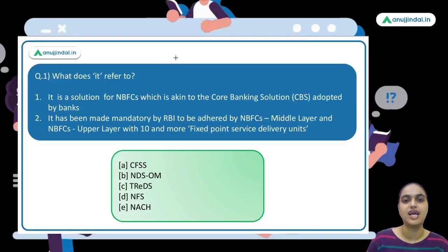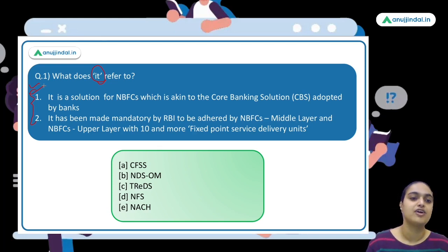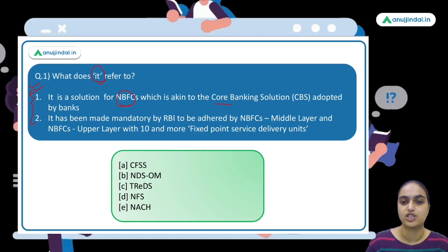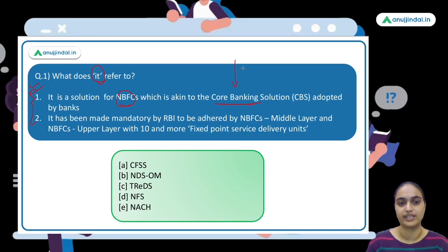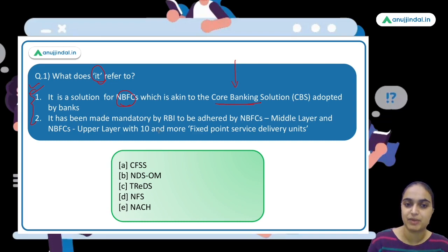The first question asks what a certain concept refers to. It is a solution for NBFCs akin to the core banking solution adopted by banks. A similar new solution has been suggested for NBFCs. The second statement says it has been made mandatory by RBI for NBFCs in the middle layer and upper layer which have 10 or more fixed point service delivery units.